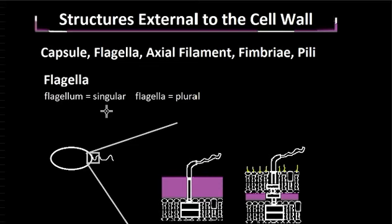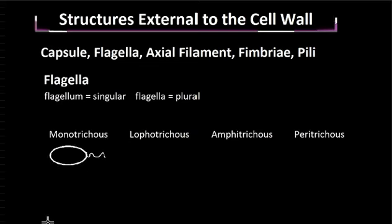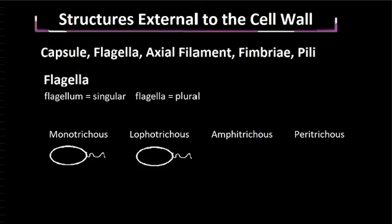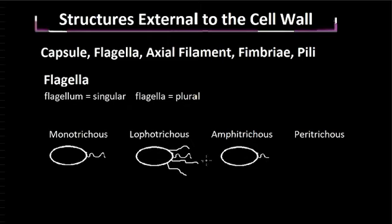There are four types of flagella arrangements. These are monotrichus, lofotrichus, ampitrichus, and petritrichus. Monotrichus, or polar, is when we have one flagellum at one end of the bacterium. Lofotrichus is when we have multiple flagella at one end of the bacterium. Ampitrichus is when we have a singular flagellum at both ends of the bacterium. Lastly, petritrichus is when we have flagella all over the bacterium.